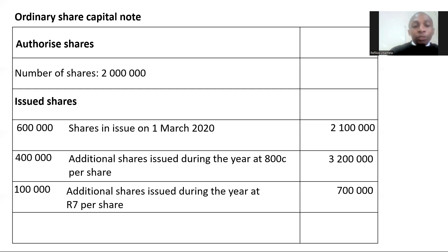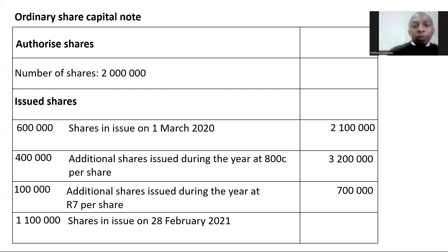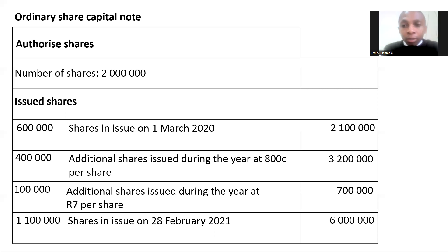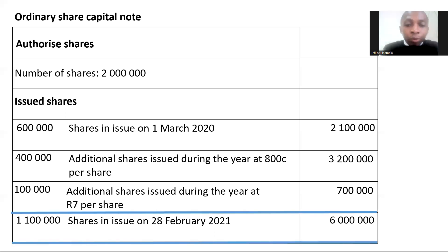Now let's calculate the balance of the number of shares at the end of the year. Take 600,000 plus 400,000 plus 100,000 — that gives you 1,100,000 shares issued by the 28th of February 2021, which is the end of the financial year. Your share capital will be R2.1 million plus R3.2 million plus R700,000, giving a total share capital of R6 million. The shareholders hold 1,100,000 shares, reflected in their share certificates.